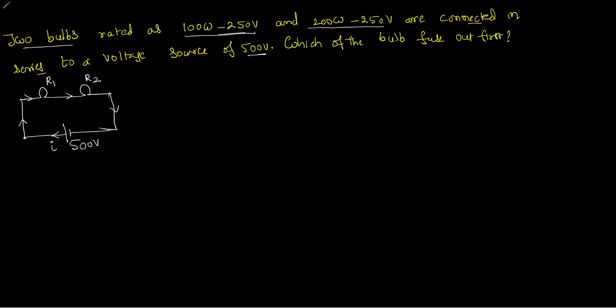So I have to calculate what is the resistance of that so that I will be able to know out of this 500 volts, how much voltage will drop here and how much voltage will drop here. And when the bulb will fuse out, if voltage supplied across any of this bulb is more than the designated voltage of 250 volts, that bulb will fuse out.